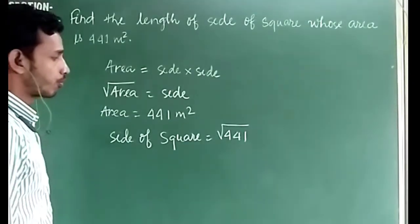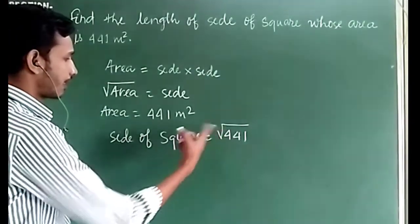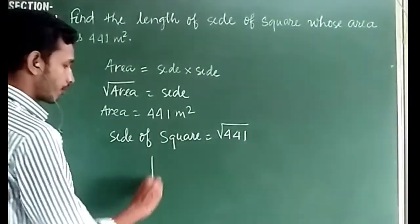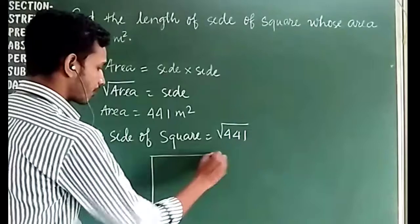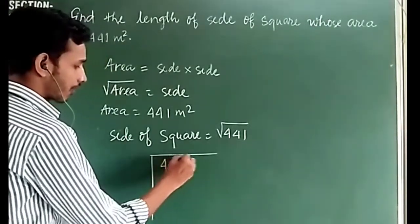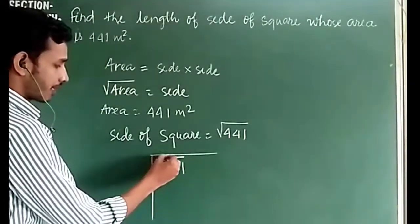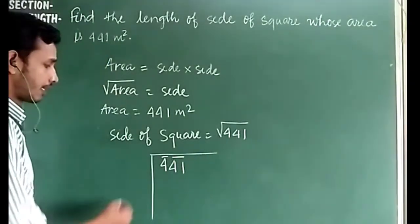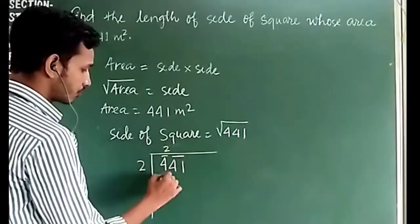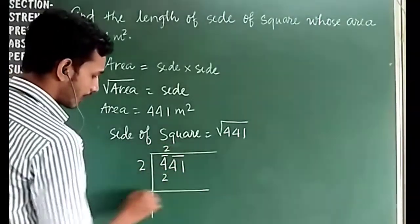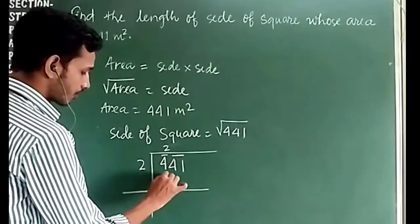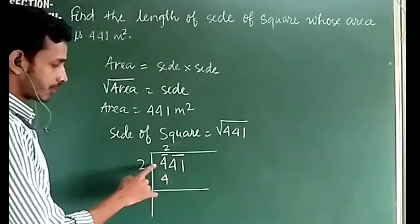The square root of 441 can be found by the division method. We make pairs from the right side: 4 and 41. We find 2×2 = 4, so the first digit is 2 with remainder 0. Then we bring down 41.